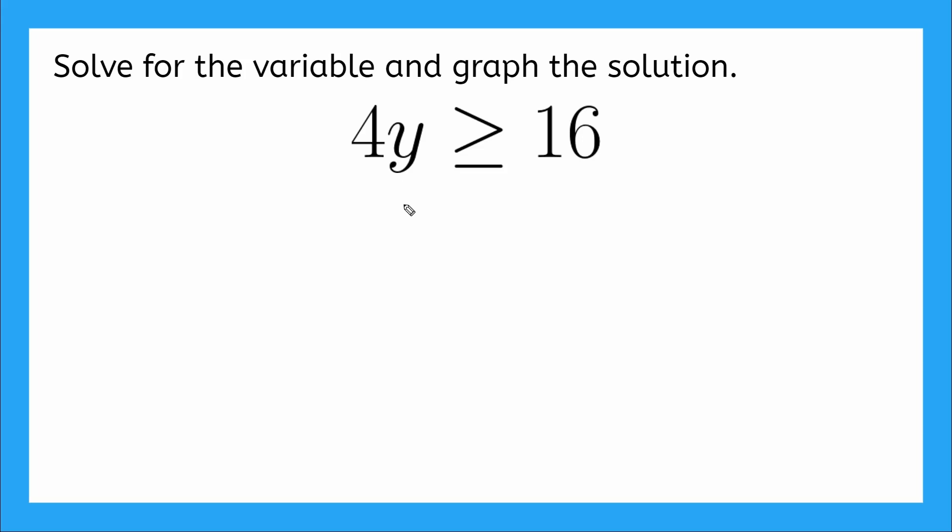Yeah, we need to get this y all by itself. So we have to undo times 4. How do we undo times 4? That's right, we divide.